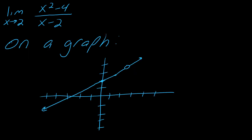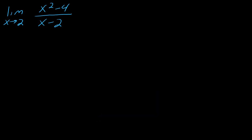If I look at the graph, it's actually a great way to figure out whether or not the limit should exist. As I'm getting closer and closer to this point, it does look like there is an actual limit. The point itself does not exist, but even if the point doesn't exist, the limit can still exist. So the graph is a great way to figure out whether or not the limit should exist if you're ever unsure.